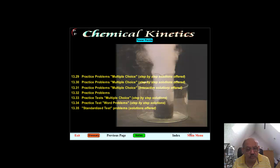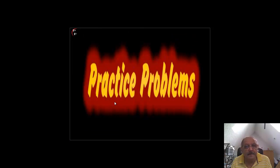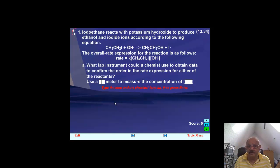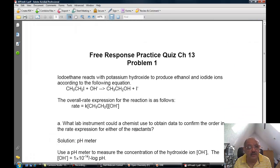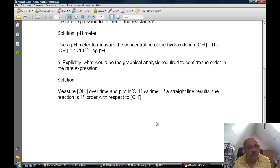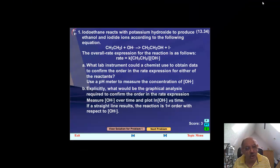We also take you through the free response style questions. Once again, this is a test and therefore you do not get two tries. You only get one try to do this. So over here, it is a pH meter and over here, it's a concentration of OH minus. And your score is three points. And once again, you can view the solution for this problem. So we give you a full detailed solution to this thing. In this manner, ladies and gentlemen, we have covered more than a thousand problems with this pedagogy alone.